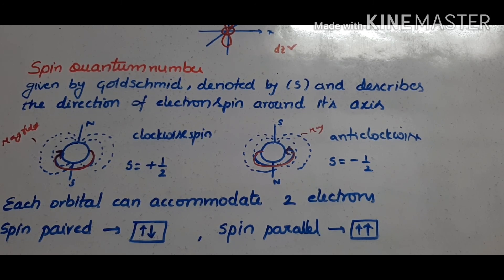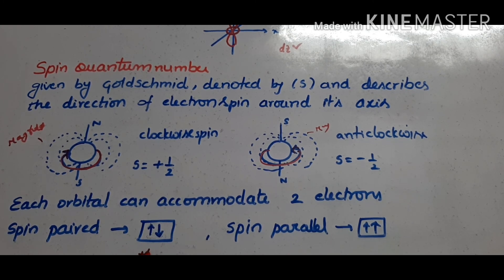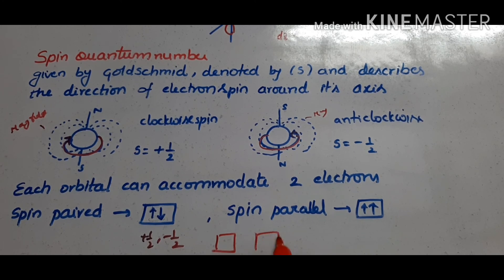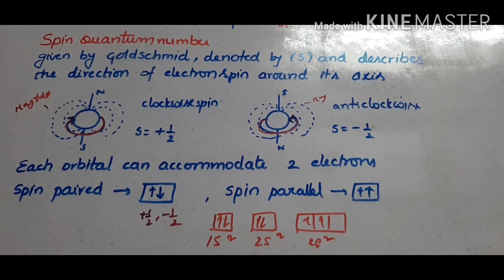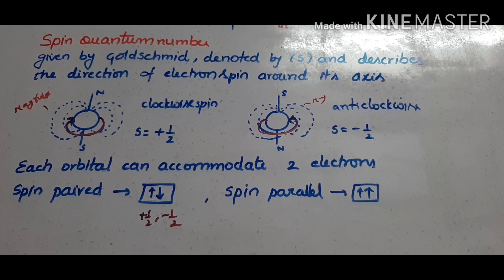So the electron is either plus half or minus half — clockwise or anticlockwise. Each orbital can accommodate two electrons — one with spin plus half and one with spin minus half. For example, 1s holds 2 electrons and 2s holds 2 electrons, each with paired spins.